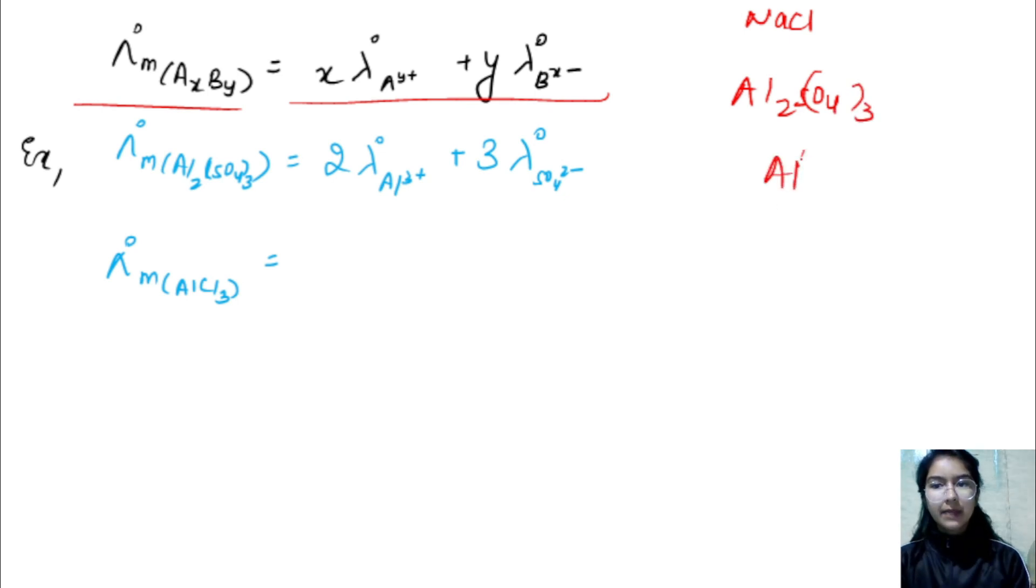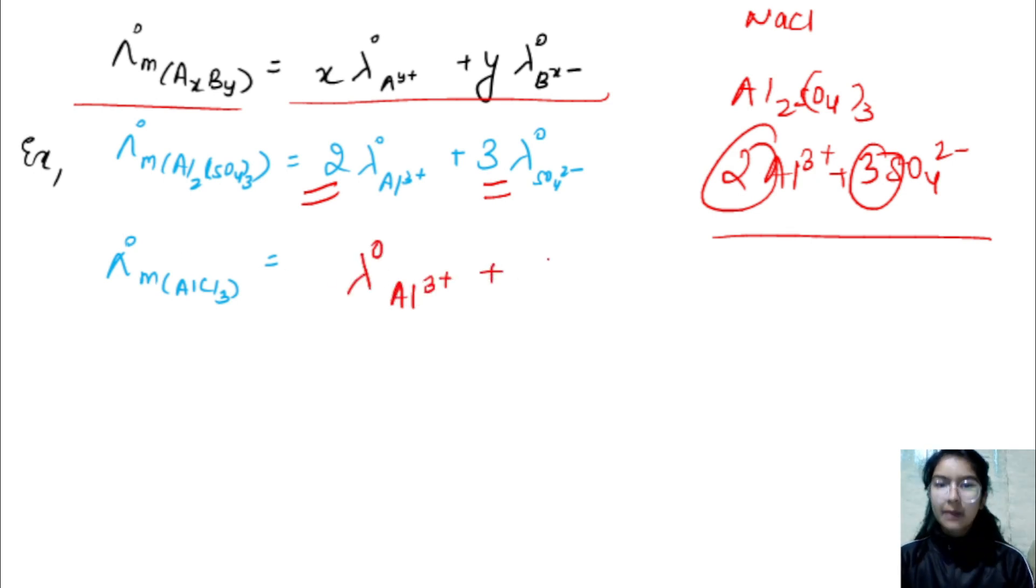But if I take AL2SO43, AL3 plus is my ion and SO4 is 2 minus. But AL2 gives 2AL3 plus, and SO43 gives 3SO4 2 minus. So this is 2 and this is 3 - our stoichiometric coefficients will come forward. If I dissociate AL2SO43, whatever my stoichiometric coefficients are will come forward, and below, my ion will come. This will be AL3 plus and SO4 2 minus. In the same way, if I write this value, it's lambda naught AL3 plus plus lambda naught Cl minus. But if I talk about AlCl3, it will dissociate to Al3 plus plus 3Cl minus. So the stoichiometric coefficient is 3, and that will also be inserted.